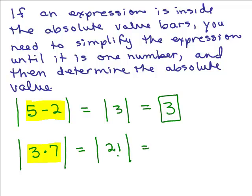And now I take the absolute value of 21. So you don't figure out what the absolute value is until you get a single number inside of there. And so this is just the basics of absolute value. And it can get a lot more complicated than this, but we're just getting down to what does it mean?